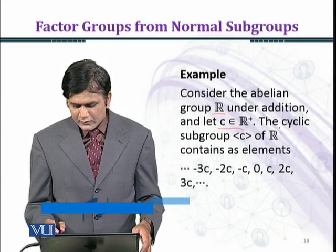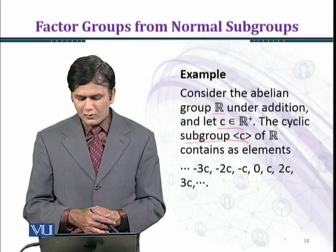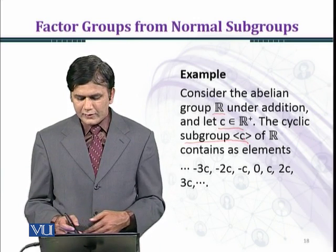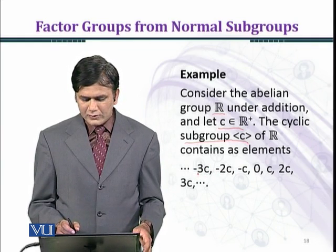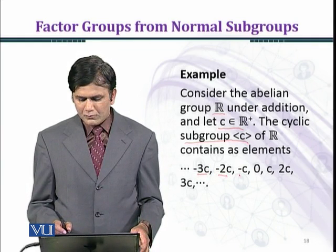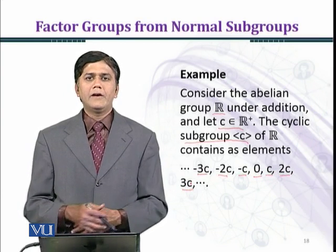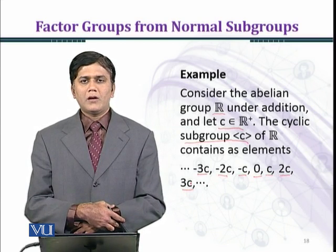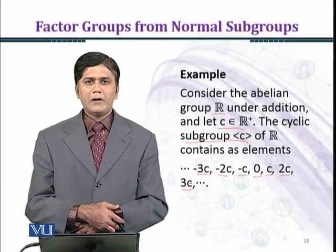The cyclic subgroup generated by c of R contains as elements minus 3c, minus 2c, minus c, 0, c, 2c, 3c and so on. Here you can see that c has all multiples.